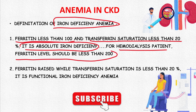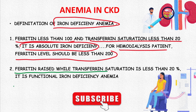For hemodialysis patients, the ferritin threshold should be less than 200 to qualify as iron deficiency anemia. The other definition applies when ferritin is raised but transferrin saturation is less than 20%.